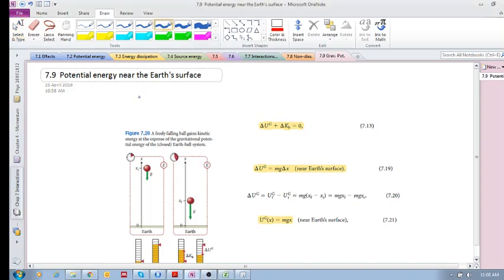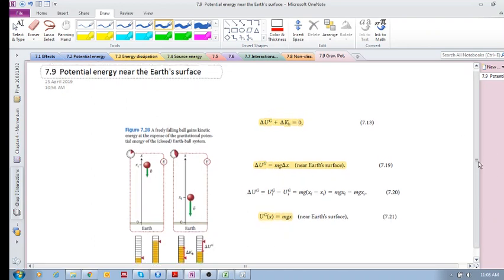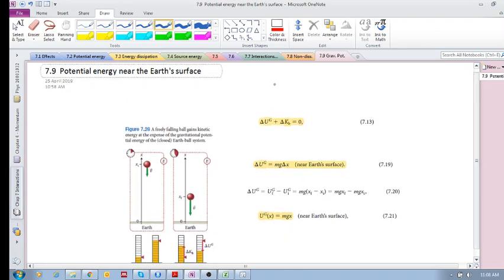This is a very quick video on potential energy near the Earth's surface - gravitational potential energy. That's what this section is about. We've seen thus far that for non-dissipative interactions we have kinetic energy and potential energy. Those are the possible energies that we have in non-dissipative interactions.